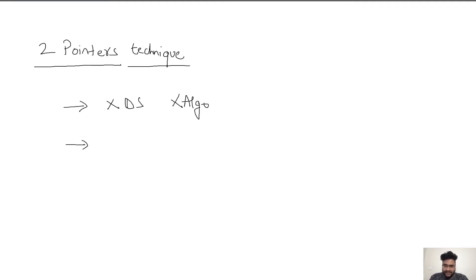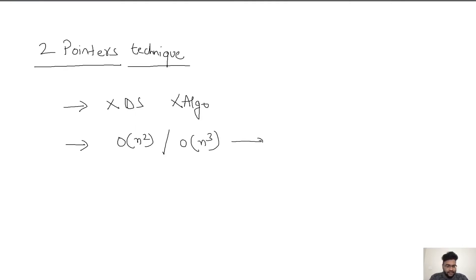The main USP of two pointers is that it is mainly used to convert a complex problem — available in, let's suppose, O(n²) or O(n³) — and it helps us solve this problem in linear time O(n). That's how we are going to see it in all the problems and techniques we study in two pointers.